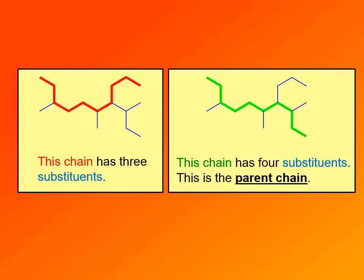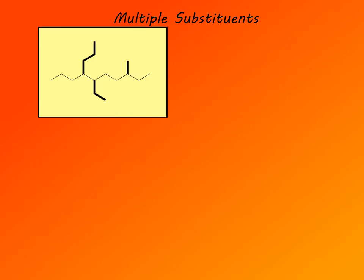You can try naming each of those substituents and you will find they are easier to name. Some of these branched substituents you will learn how to name in the next video. When multiple substituents are present on the parent chain, we have to name and number all of them. In this example, the parent chain is the horizontal zigzag line, and substituents branching off are shown in bold. From left to right they are: propyl (three carbons), ethyl (two carbons), and methyl (one carbon). We list them alphabetically and give them the smallest possible set of numbers.